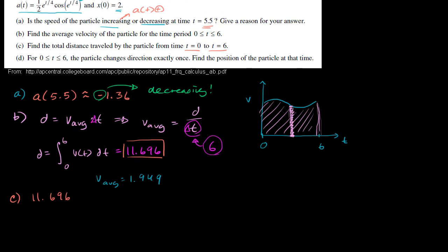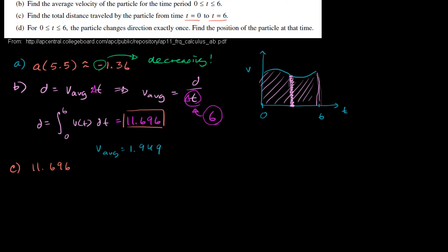Finally, we're on part d: for t between 0 and 6, the particle changes direction exactly once. Find the position of the particle at that time. Let's think about when the particle changes direction. If the velocity is going from positive to negative, or negative to positive, it's switching direction — that must be a point in time where velocity equals zero and then changes sign.